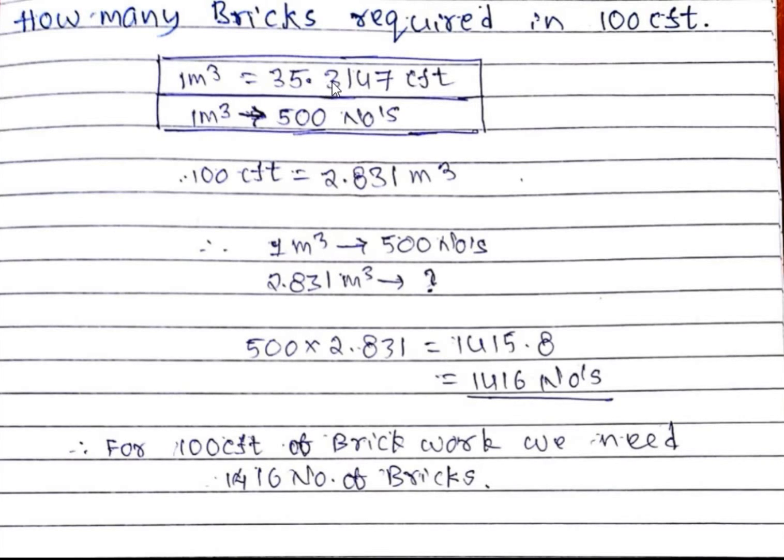If one meter cube equals to 35.3147 cubic feet, then 100 cubic feet equals to 2.831 meter cube. If we need 500 numbers for one meter cube, then how many number of bricks is required for 2.831? Just multiply it, then you will get 1415.8, which is approximately equals to 1416 numbers.